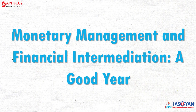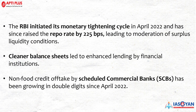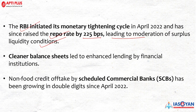Chapter 4: Monetary Management and Financial Intermediation — A Good Year. RBI initiated its monetary tightening cycle in April 2022 and has since raised the repo rate by 225 basis points, leading to moderation and surplus liquidity conditions. RBI takes such decisions when economic conditions worsen. There is a clear balance sheet position that can lead to enhanced lending by financial institutions, and non-food credit offtake by scheduled commercial banks has been growing in double digits since April 2022.